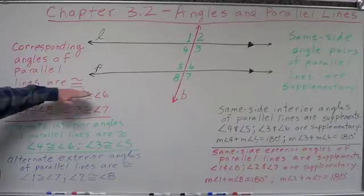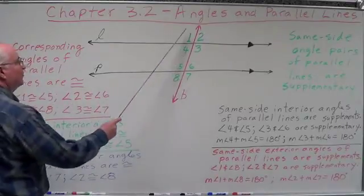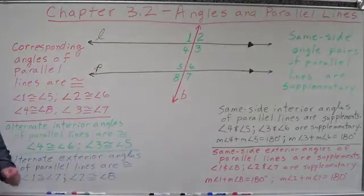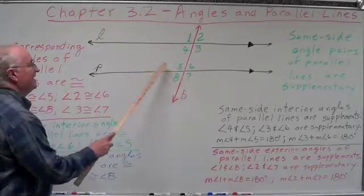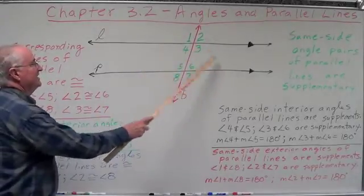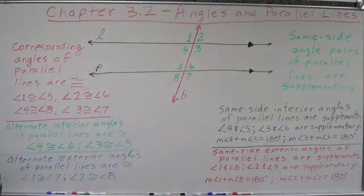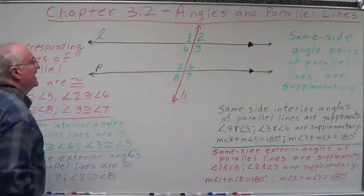Corresponding angles of parallel lines are congruent. What are the interior angles of this drawing — the angles between the two lines that the transversal cuts? Angles three, four, five, and six are our interior angles. That leaves angles one, two, seven, and eight to be the exterior angles.